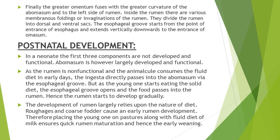Now let's come to the postnatal development of the ruminant stomach. In a neonate, the first three compartments — rumen, reticulum, and omasum — are not developed and functional, while the abomasum is largely developed and functional. As a neonate consumes a fluid diet in the early days of its life, ingesta directly passes into the abomasum via the esophageal groove because the rumen is non-functional. When the young one starts eating solid diet, the esophageal groove opens and food passes into the rumen, which then starts to develop gradually.